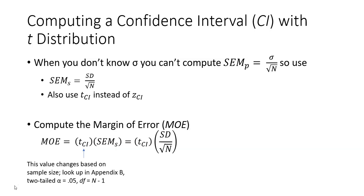You'll be using the Z distribution to compute a 95% confidence interval. For questions 11 through 20, you're going to be working with a T distribution.